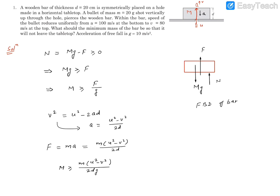Now we can put the values to get the numerical answer. The minimum mass of the bar should be: M = m(u² - v²)/(2dg) where m = 20 grams.